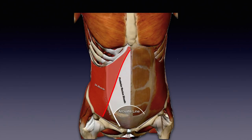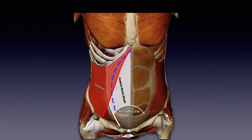When performing transversus abdominis release, the blue line here represents the line of division. We stay medial to the linea semilunaris and only divide the muscle in the upper third of the abdominal wall. As we travel medial to the linea semilunaris towards the arcuate line, we divide the posterior lamella of the internal oblique, which achieves the posterior sheath, and the second layer is the transversus abdominis aponeurosis. Note also that in the upper third, the release curves into the sub-xiphoid fat pad or preperitoneal space in the middle.